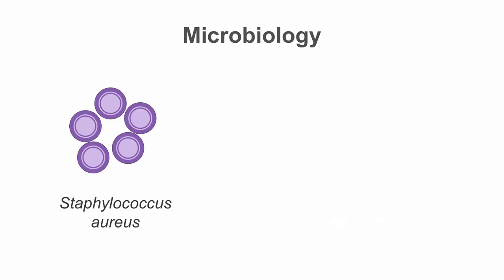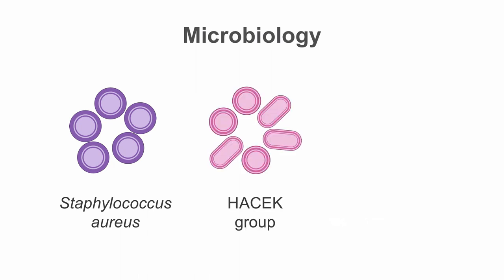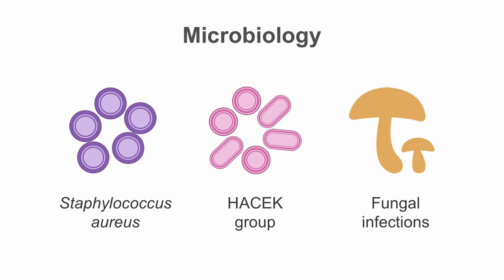80% of infective endocarditis is caused by gram-positive cocci, of which Staphylococcus aureus is the most common. The HACEK group of organisms consists of fastidious gram-negative bacteria that are an unusual cause of infective endocarditis. They are, together with fungal infections, notoriously associated with large friable vegetations, which can easily break off and cause emboli to vital organs.